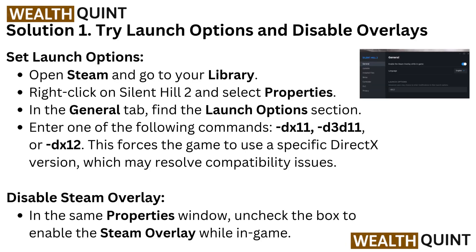Solution 1: Try launch options and disable overlays. To set launch options, open Steam and go to your library. Right-click on Silent Hill 2 and select Properties. In the General tab, find the Launch Options section and enter one of the following commands: DX11, D3D11, or DX12. This forces the game to use a specific DirectX version, which may resolve compatibility issues.